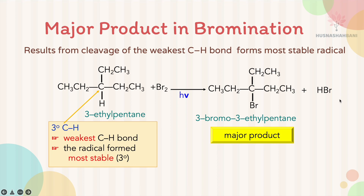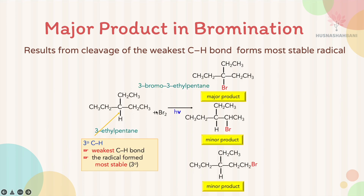HBr is the side product. When 3-bromo-3-ethylpentane is the major product, the minor products come from bromine replacing hydrogen at the secondary carbon or the primary carbon. We have three different products of halogenation overall. When the question asks to draw the major product, make sure to label it. If the question asks for all products, make sure to label major and minor products and draw all possibilities of the minor products.